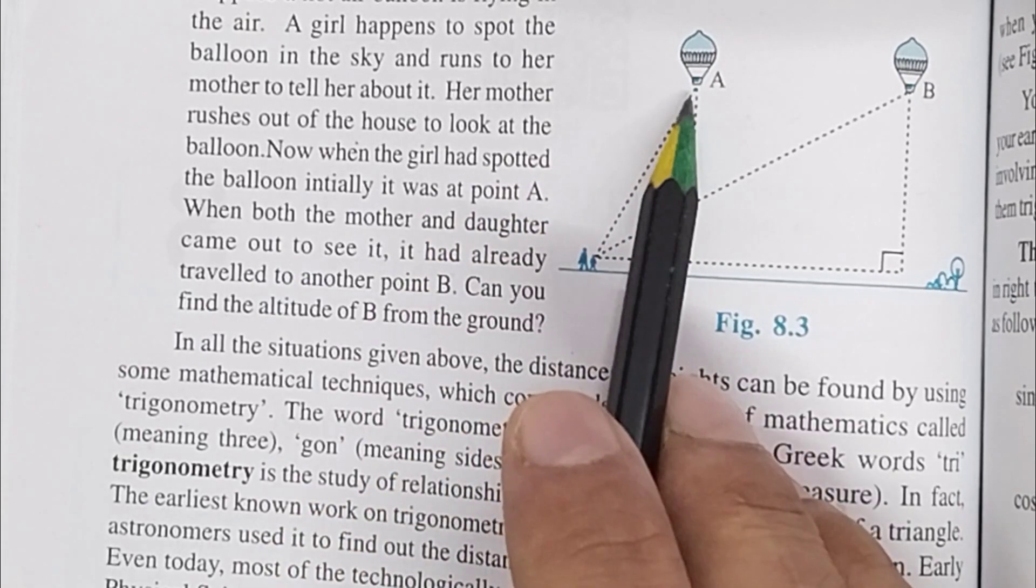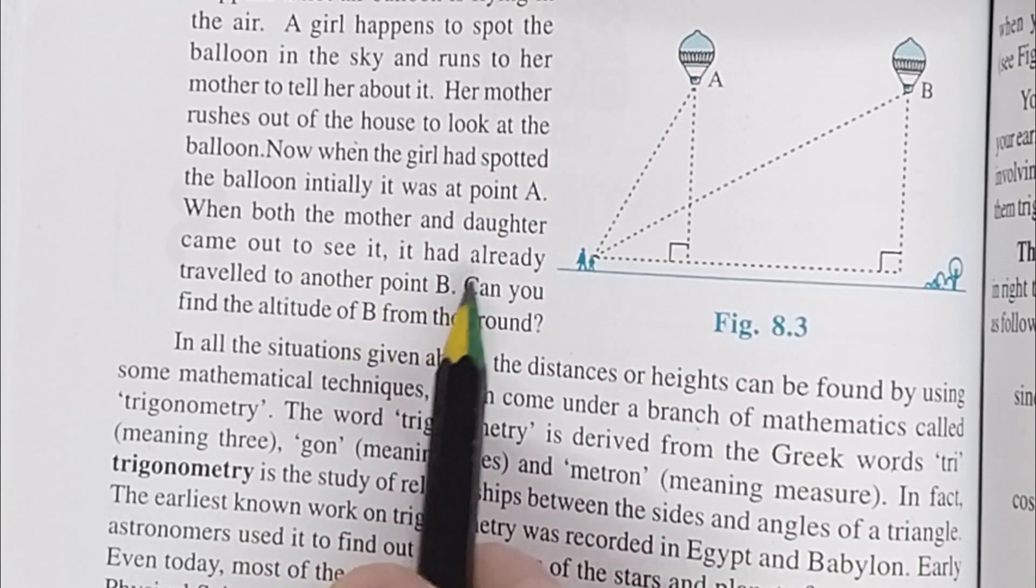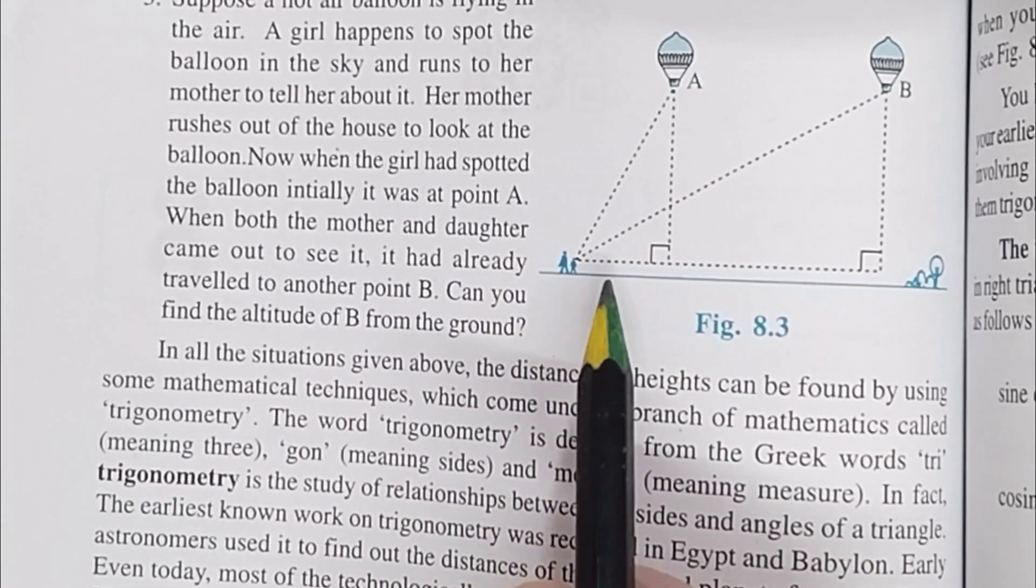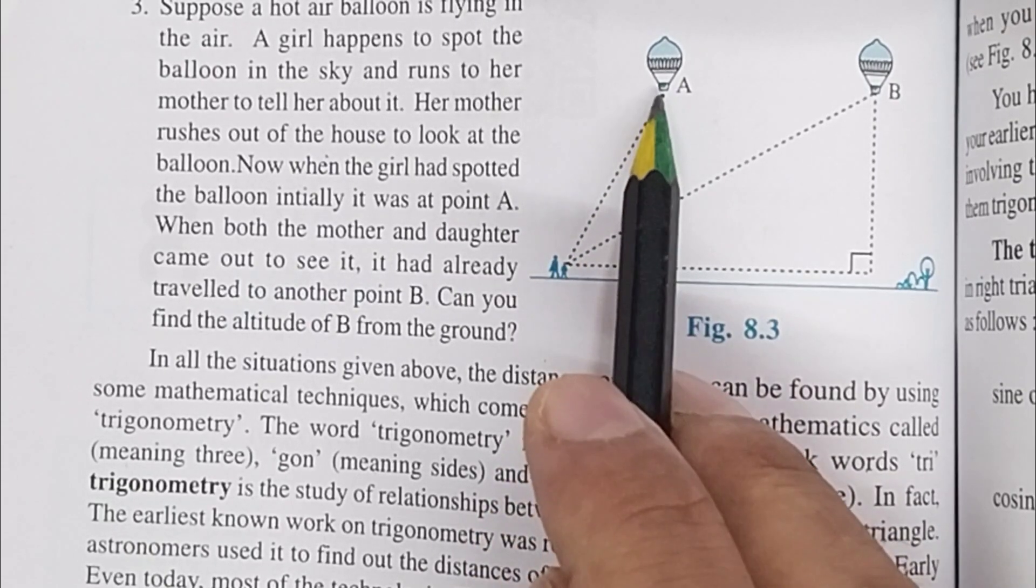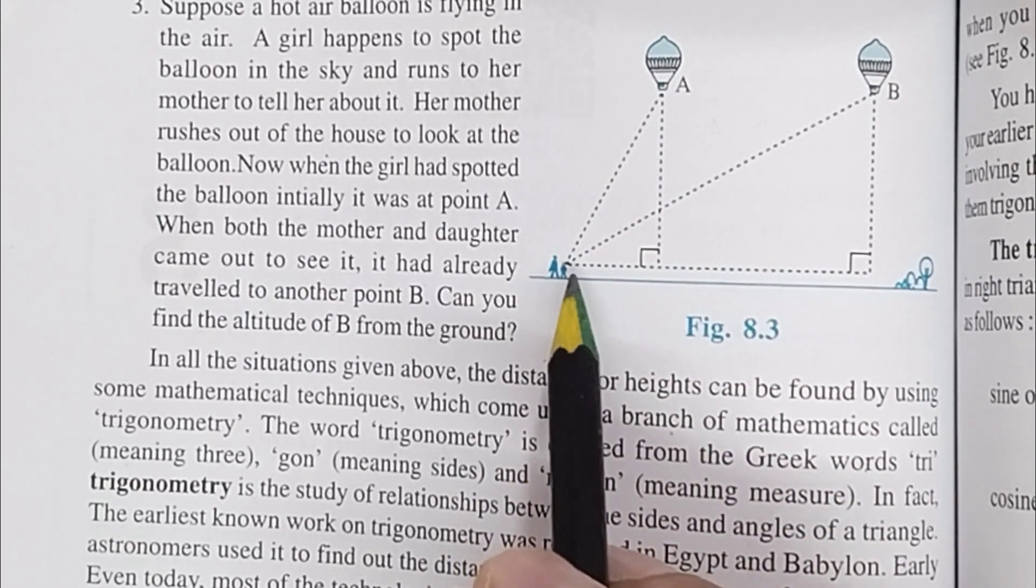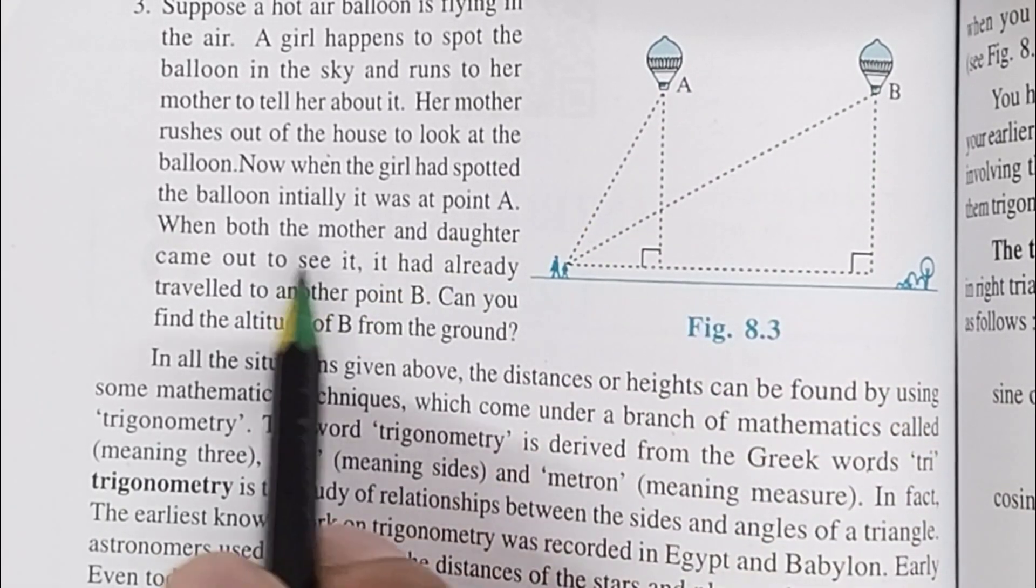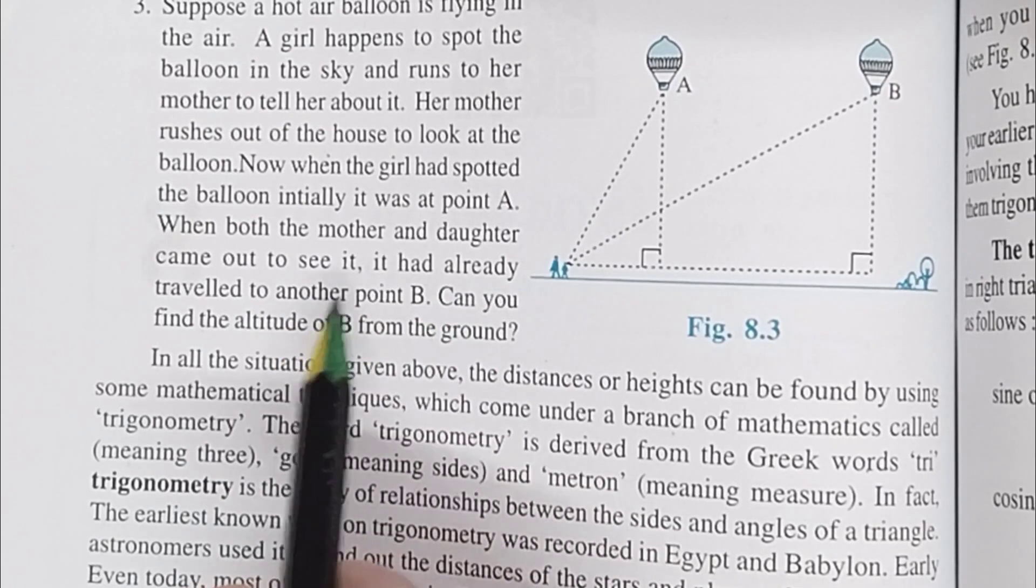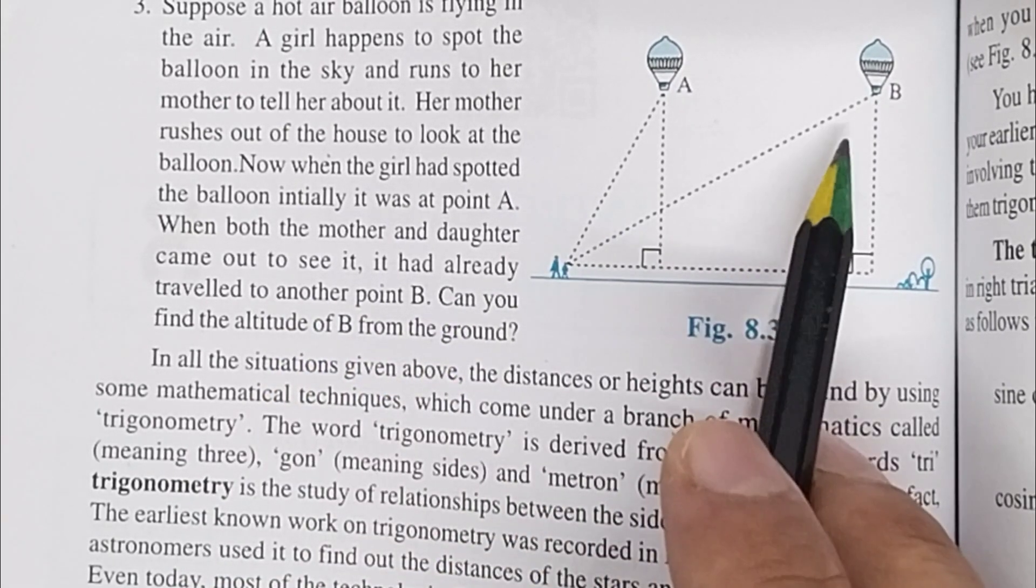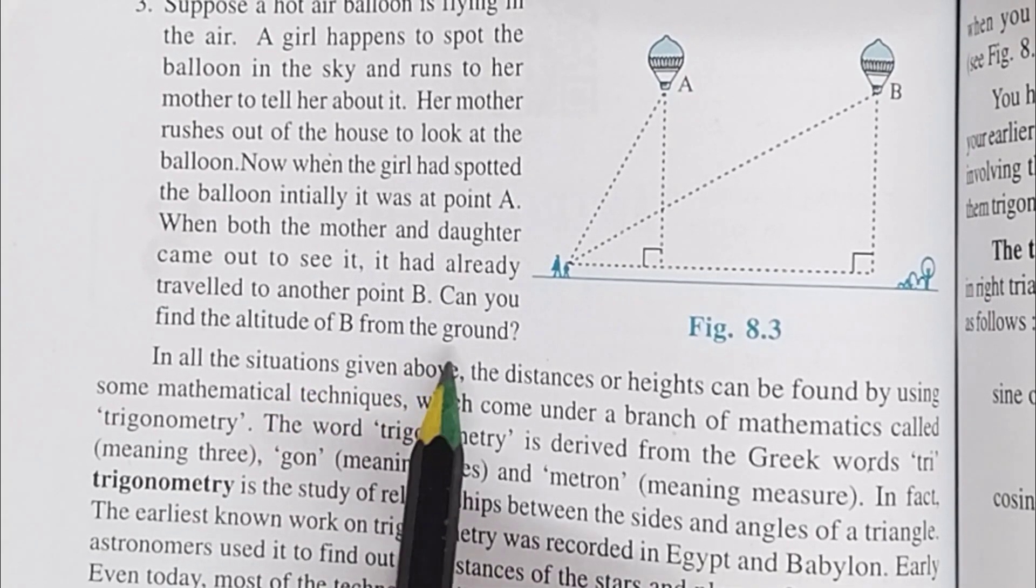Now when the girl has spotted the balloon, initially it was at point A. And when both mother and daughter came out to see it, the balloon reached at B. It had already traveled to another point B. So can you find the altitude of B from ground?